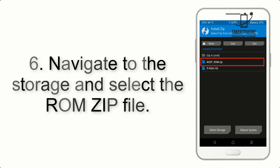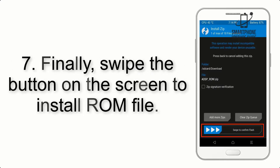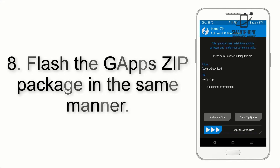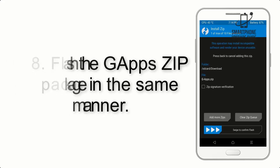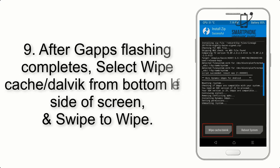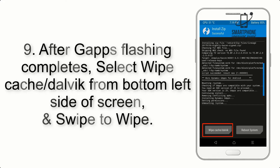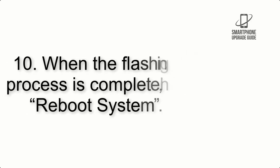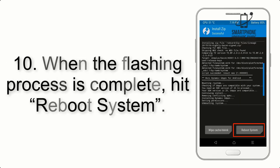Step 6: Navigate to the storage and select the ROM zip file. Step 7: Swipe the button on the screen to install the ROM file. Step 8: Flash the GApps zip package in the same manner. Step 9: After GApps flashing completes, select Wipe Cache and Dalvik from the bottom left side of the screen and swipe to wipe.